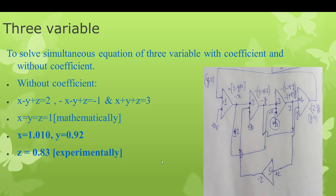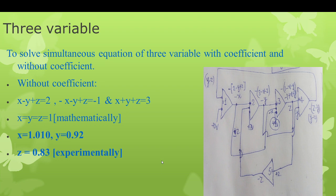For three variables with coefficients, I take: 2x + y + z = 4, 2x - y + z = 2, 2x - y - z = 0. Solving gives x = y = z = 1. Designing the circuit and applying it to the analog computer using additional op-amps, the experimental results are x = 1.25, y = 0.87, and z = 1.063, which satisfactorily matches the mathematical solution. This shows that complicated equations can be solved simply by designing a circuit and reading the output voltages.